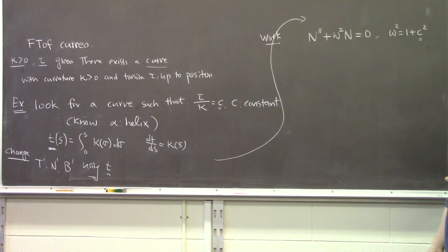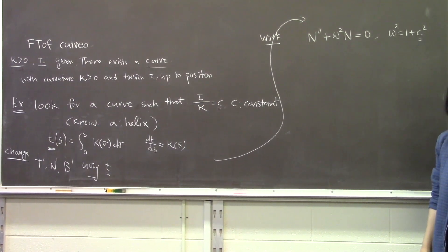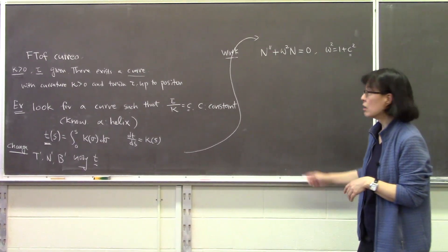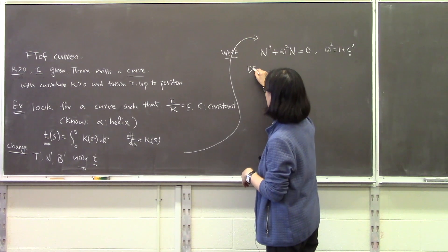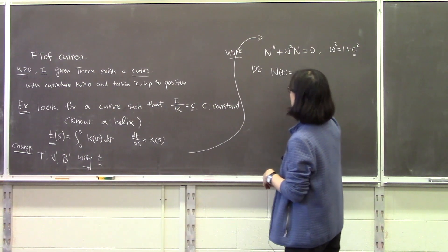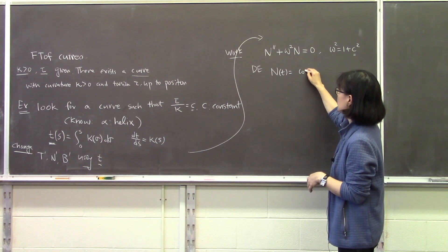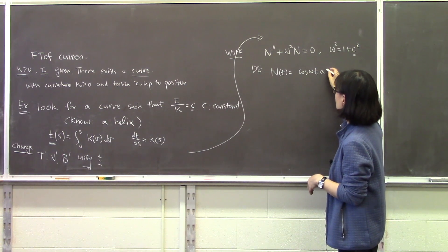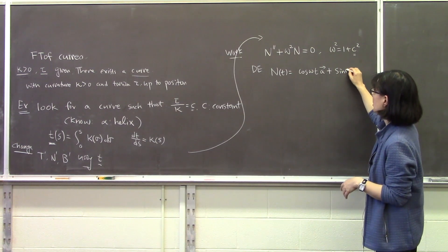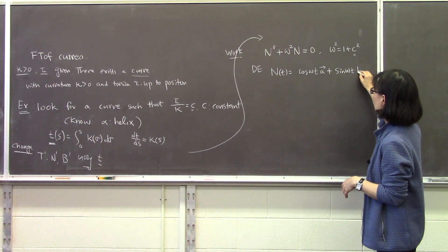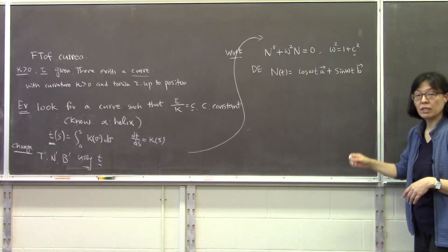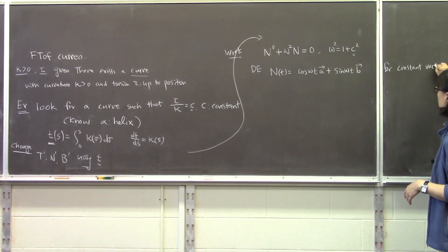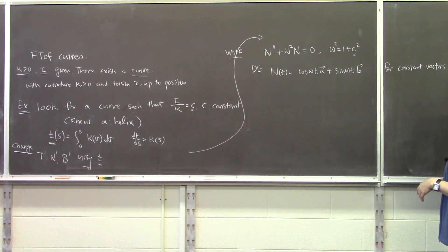Using the t variable, we obtain a second-order equation: the second derivative of N plus w-squared times N equals zero, where w-squared equals 1 plus c-squared. From differential equations, we know the solution is N = cos(wt) A + sin(wt) B for constant vectors A and B.